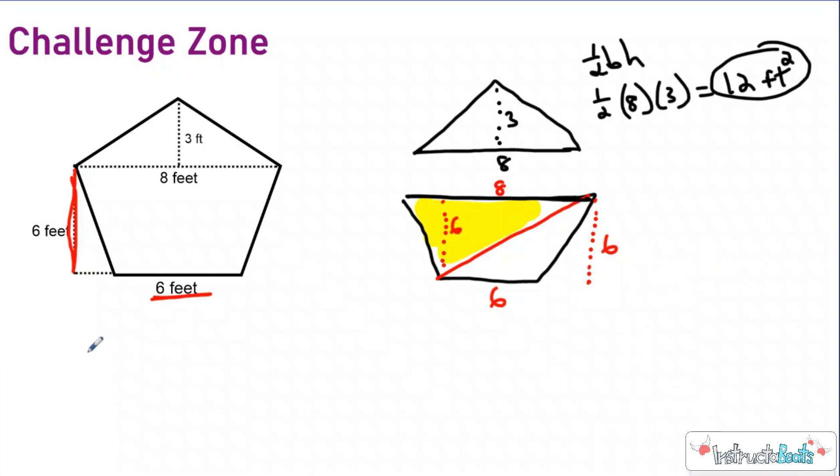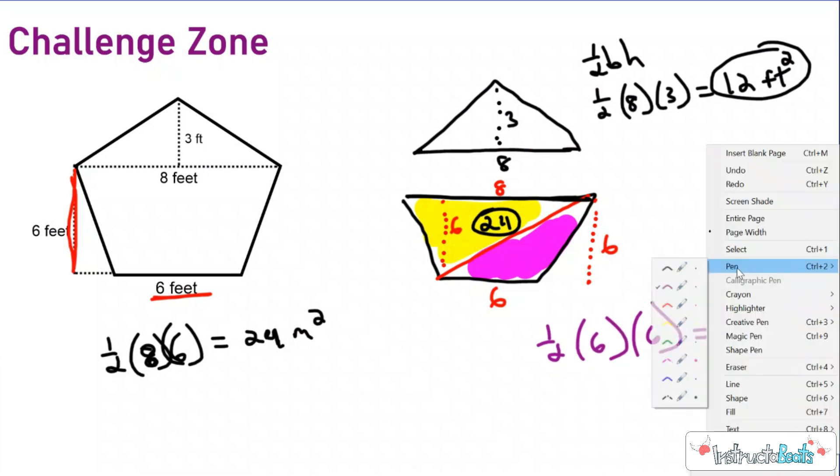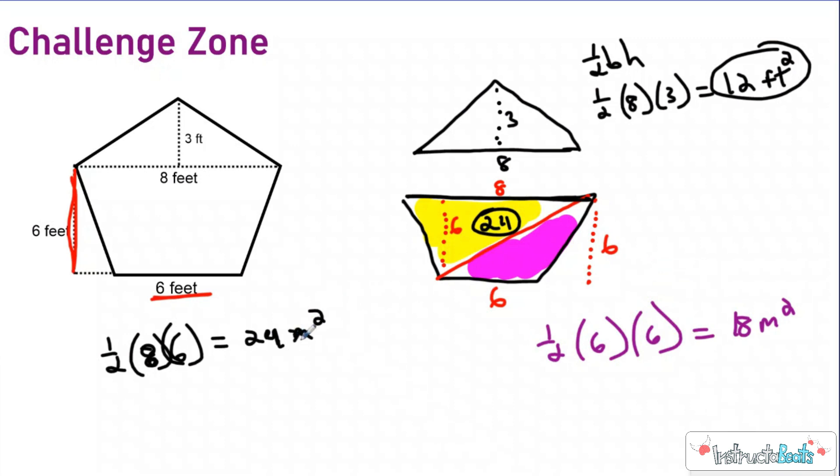So for this yellow highlighted part, I'm using 8 and 6. And when I plug that in, one half, 8 times 6, I'm going to get 24. So I know my first part is 24 meters squared. Then for my purple part right here, I know I have 6 and 6, so one half, 6 times 6, and that's going to give me 18 meters squared. And these should actually all be feet squared. Sorry, I was getting that confused at the last one. So if I add those two together, though, for my trapezoid, I'm going to get 42 feet squared.